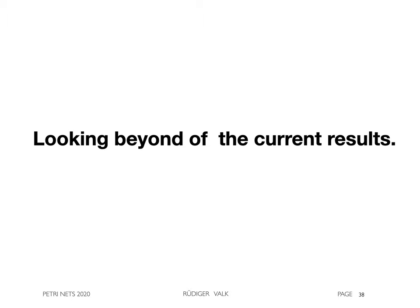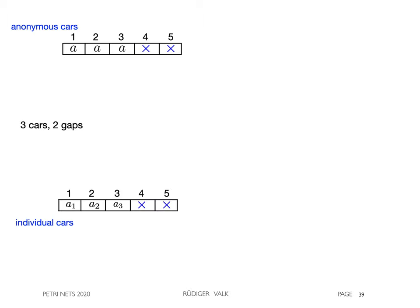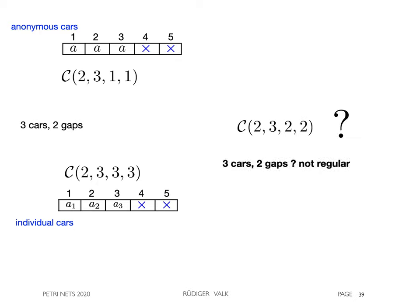In our research, we did care about the basics only on the theory of cycloids for traffic queues. Let's look a little bit beyond by a little example. Here we have two models for three cars and two gaps. One with anonymous and one with individual cars. As just shown, the corresponding cycloids are 2-3-1-1 and 2-3-3-3. In between, we have the cycloid 2-3-2-2. We ask, what is its behavior?